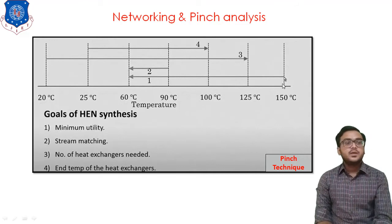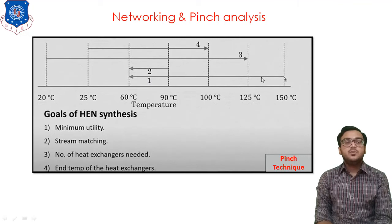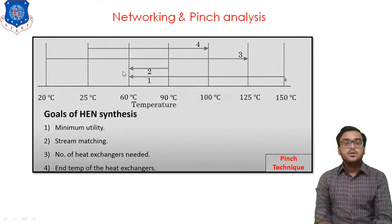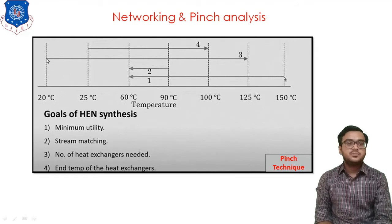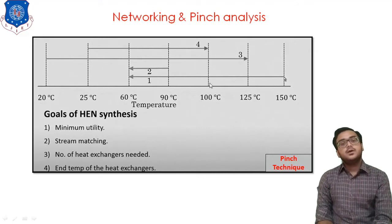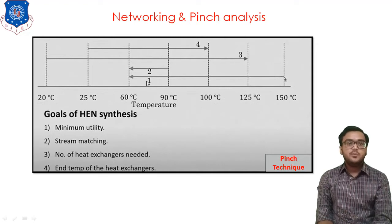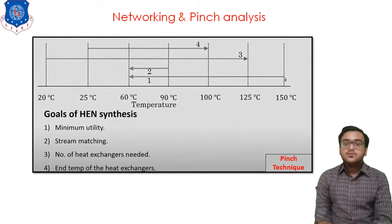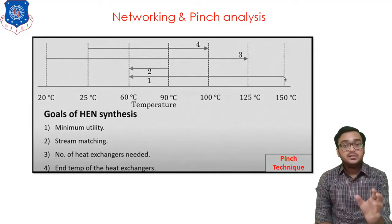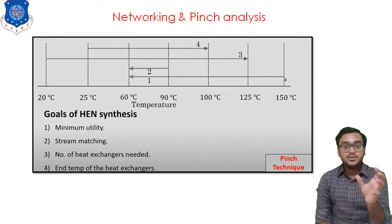For stream number 1, we want to reduce temperature from 150 to 60 degrees — plot a line from 150 to 60. Then for stream number 2. For stream number 3, a cold stream, we require to increase temperature from 20 to 125 degrees — plot this line. Similarly for stream number 4. Observing the temperature profile diagram, all four streams are exchanging heat in the zone where the temperature profile is between 60 and 90 degrees.